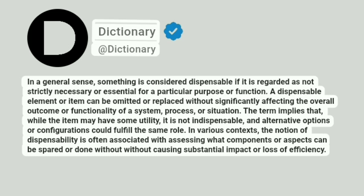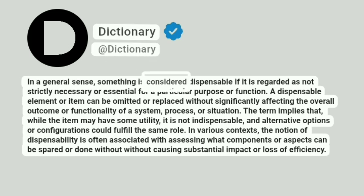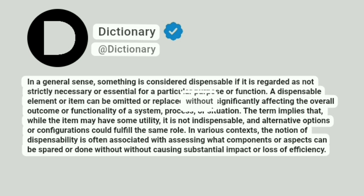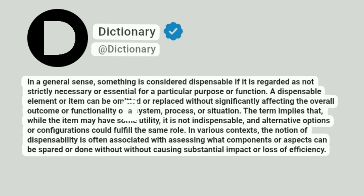Dictionary. Addictionary. In a general sense, something is considered dispensable if it is regarded as not strictly necessary or essential for a particular purpose or function. A dispensable element or item can be omitted or replaced without significantly affecting the overall outcome or functionality of a system, process, or situation.